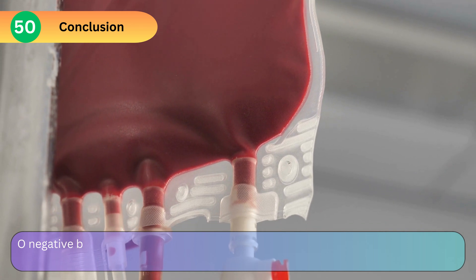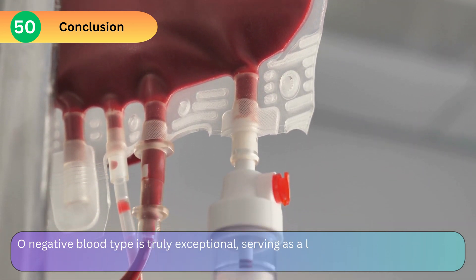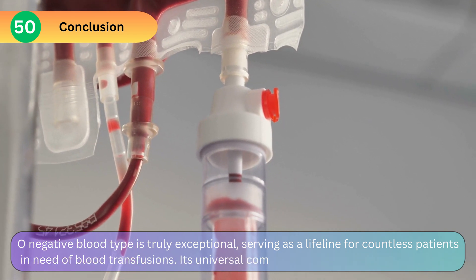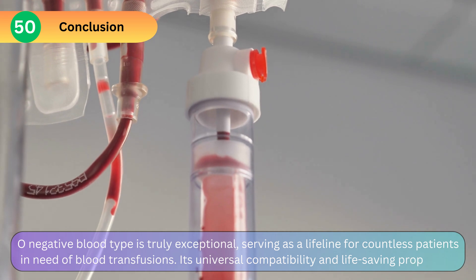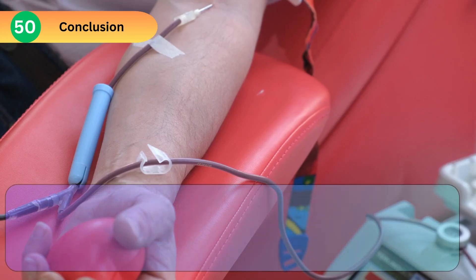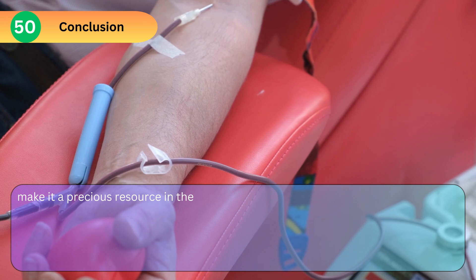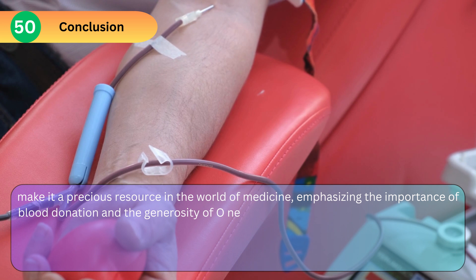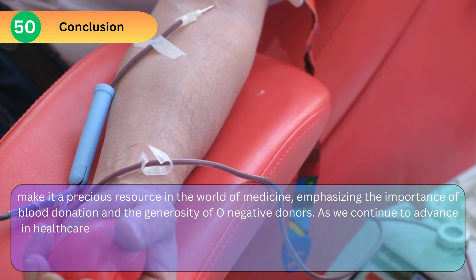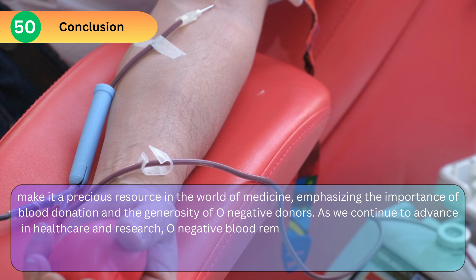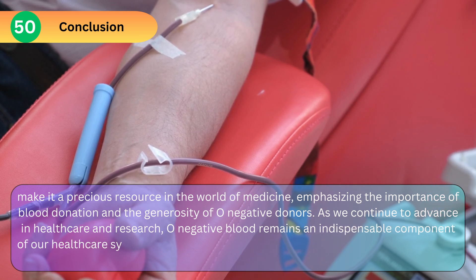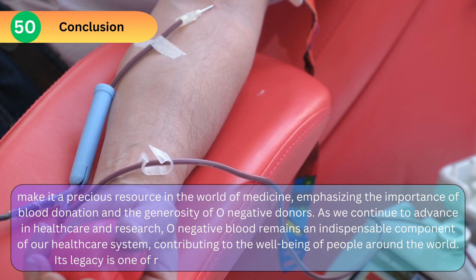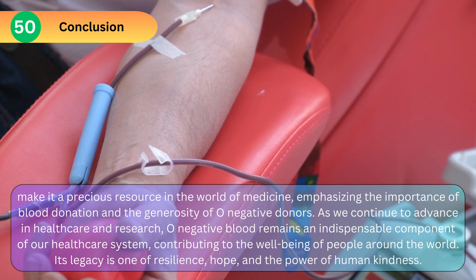Conclusion: O negative blood type is truly exceptional, serving as a lifeline for countless patients in need of blood transfusions. Its universal compatibility and life-saving properties make it a precious resource in the world of medicine, emphasizing the importance of blood donation and the generosity of O negative donors. As we continue to advance in healthcare and research, O negative blood remains an indispensable component of our healthcare system, contributing to the well-being of people around the world. Its legacy is one of resilience, hope, and the power of human kindness.